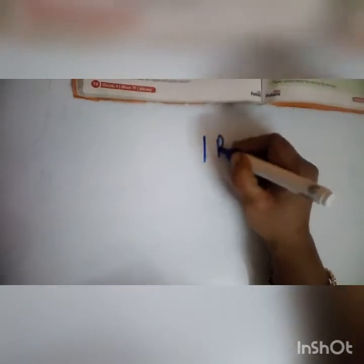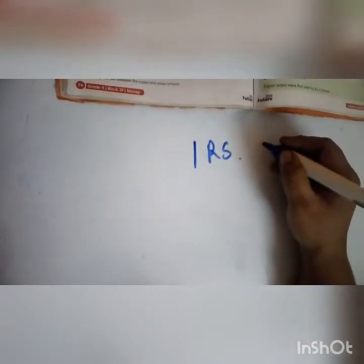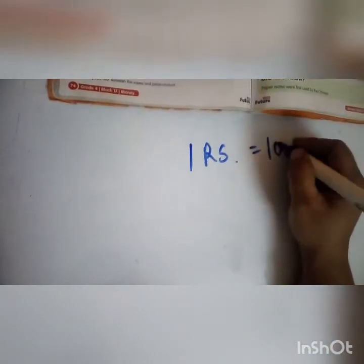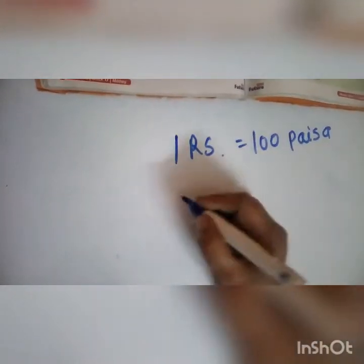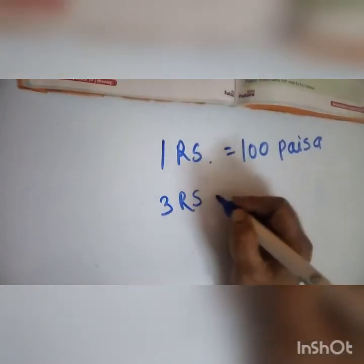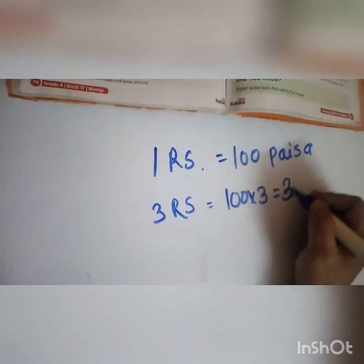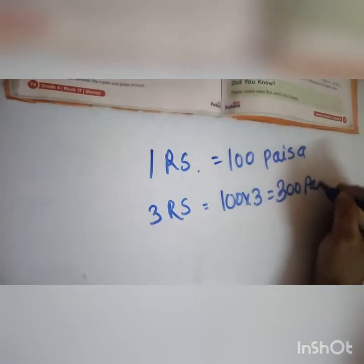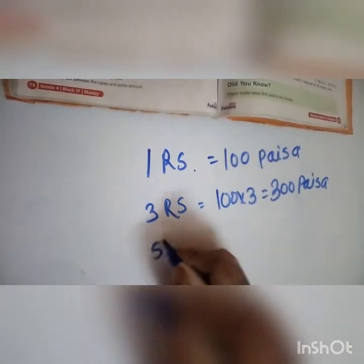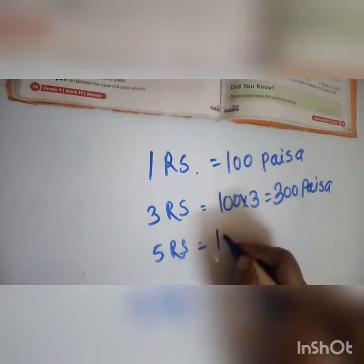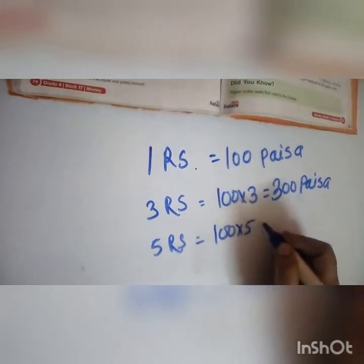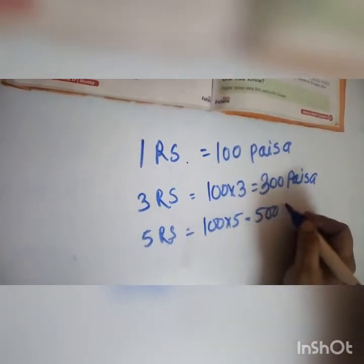How do we convert rupees into paisas? We know that 1 rupee is equal to 100 paisa. So if we have 3 rupees, that means 100 multiplied by 3 is equal to 300 paisa. If we have 5 rupees, that means 100 multiplied by 5 is equal to 500 paisa.